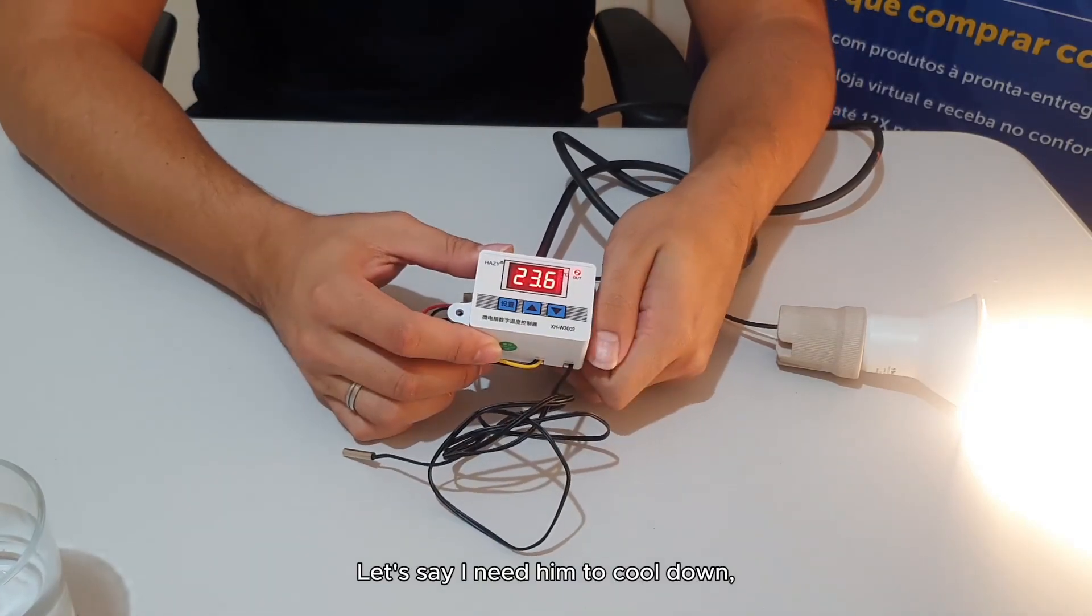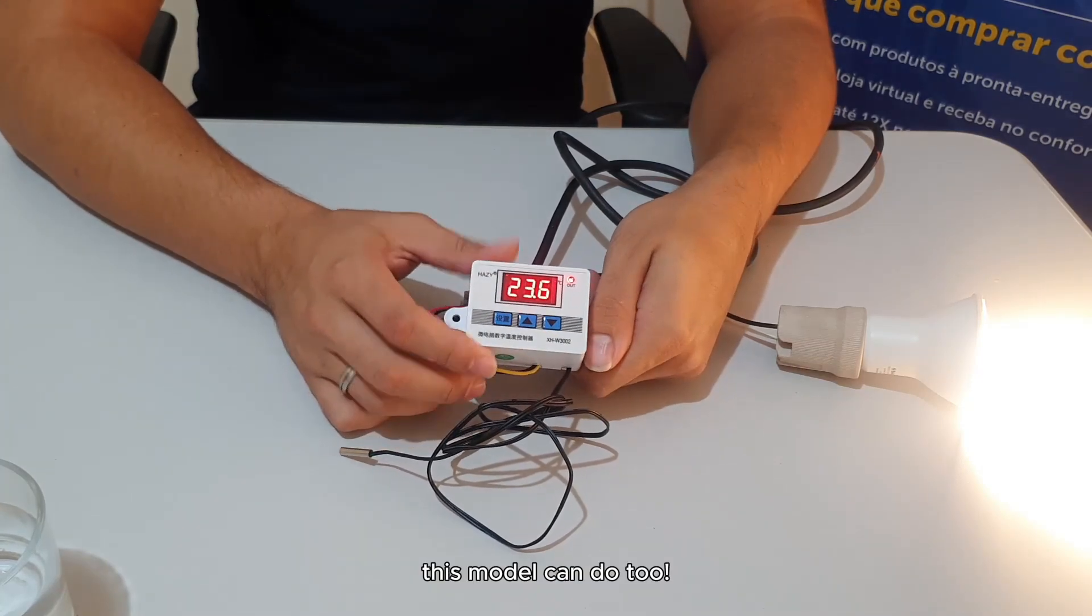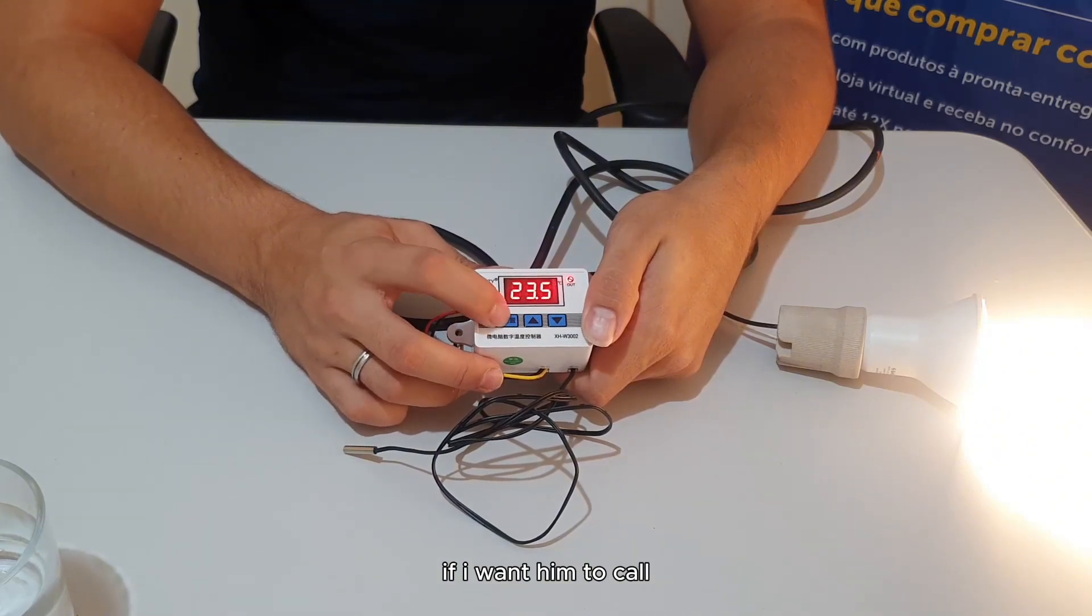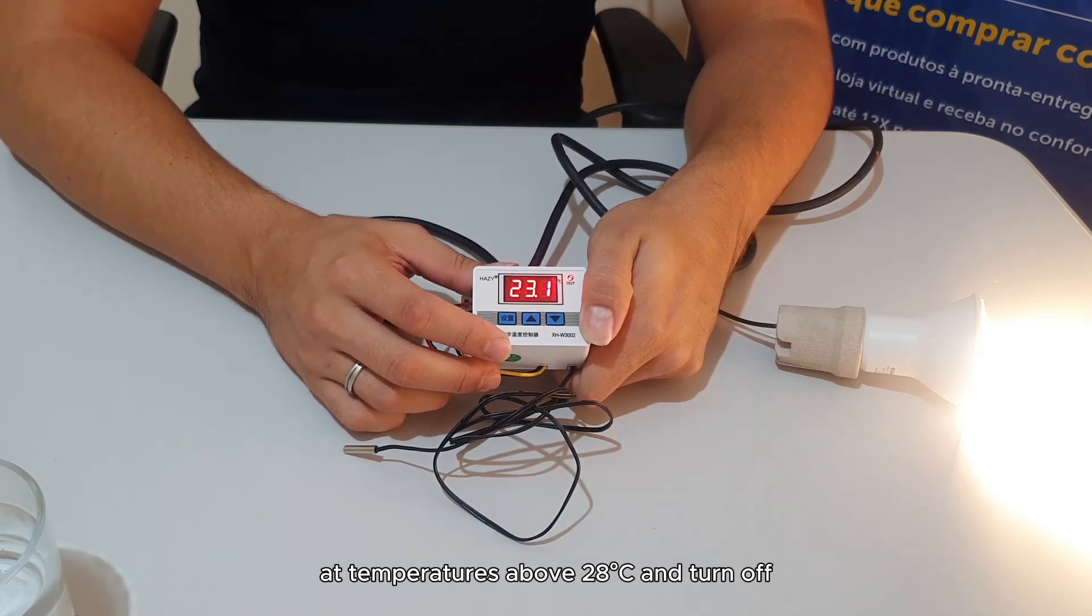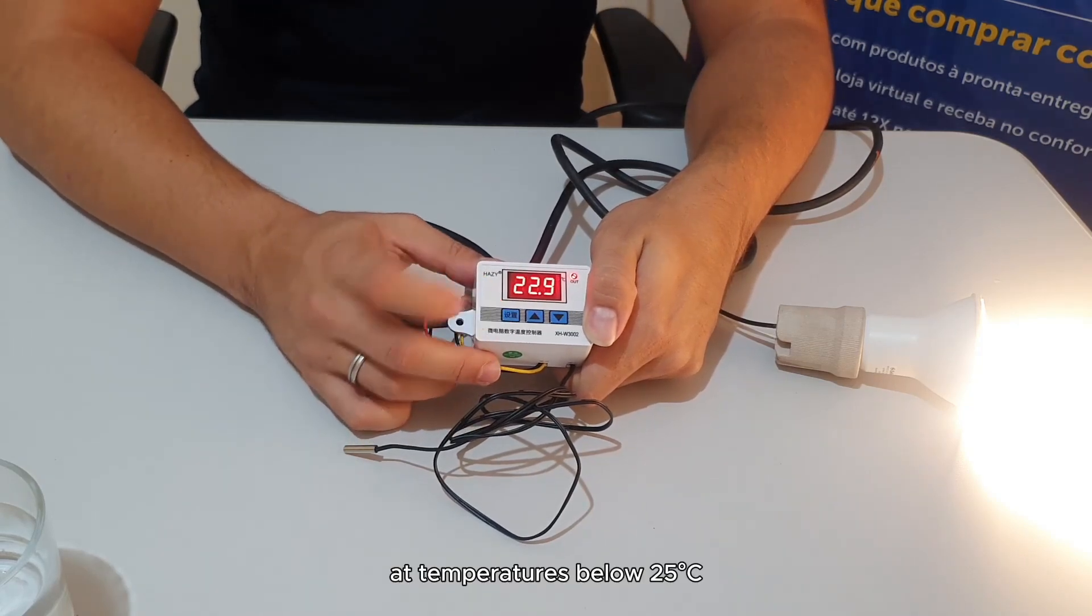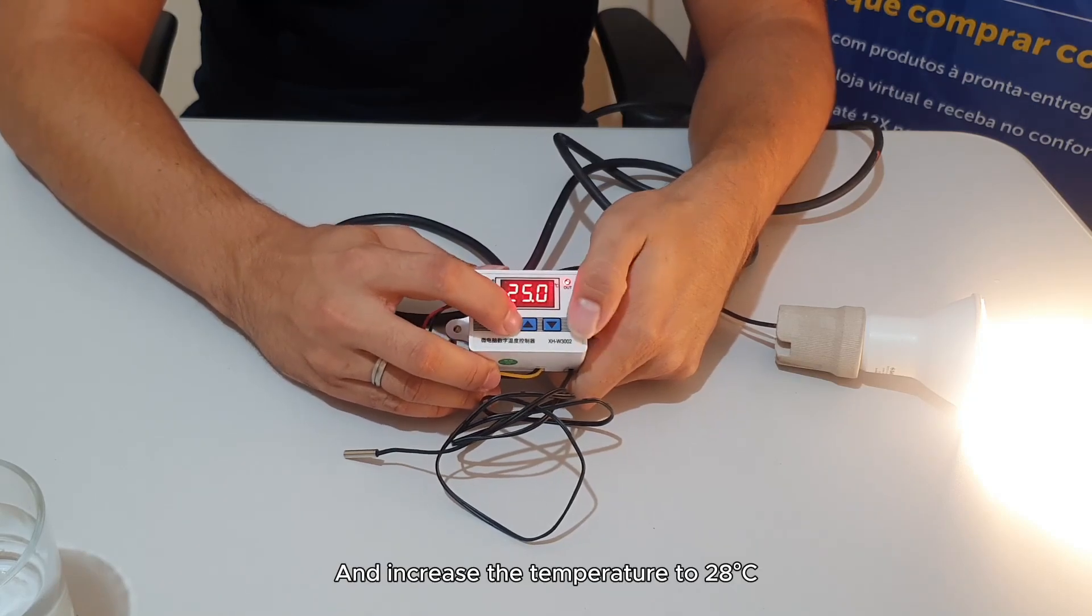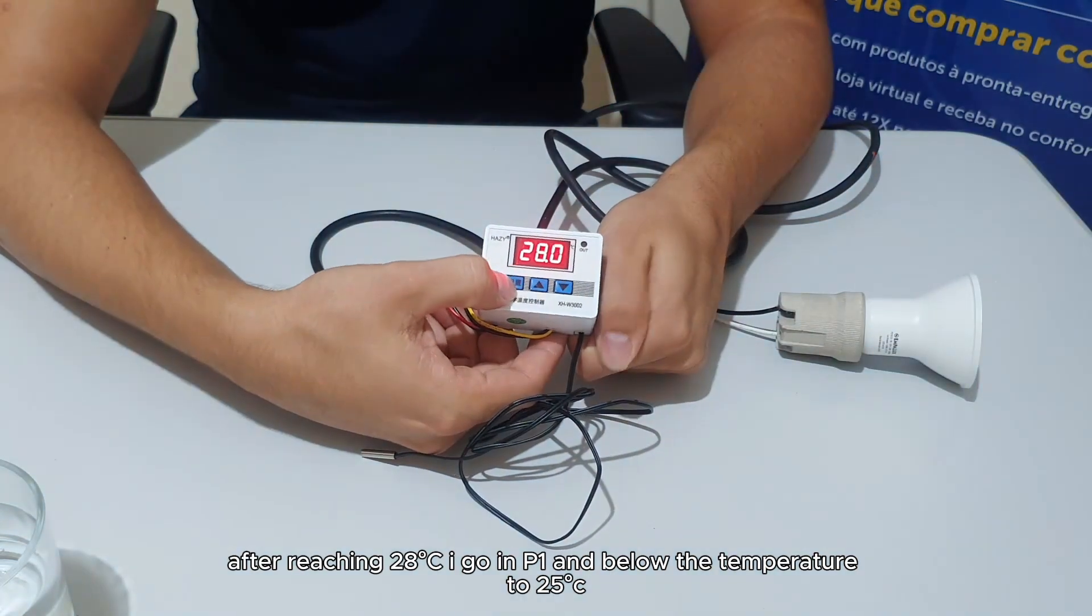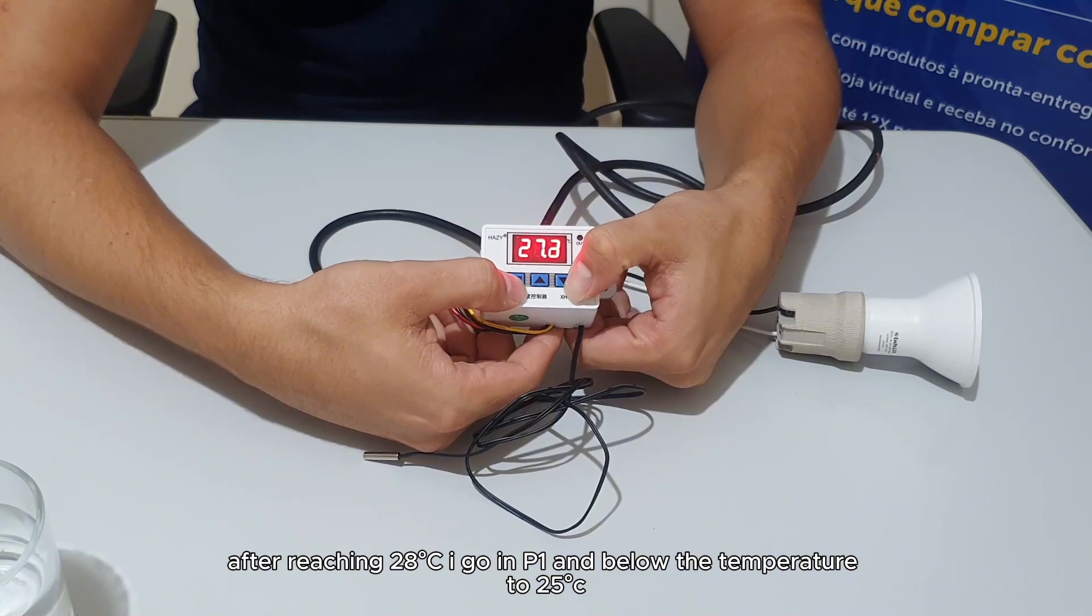Let's say I need it to cool down. This model can do that too. I just need to reverse it if I want it to turn on at temperatures above 28 degrees celsius and turn off at temperatures below 25 degrees celsius. I go in p0 and increase the temperature to 28 degrees celsius. After reaching 28 degrees celsius I go in p1 and lower the temperature to 25 degrees celsius.